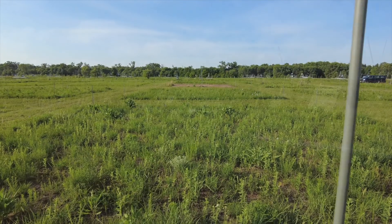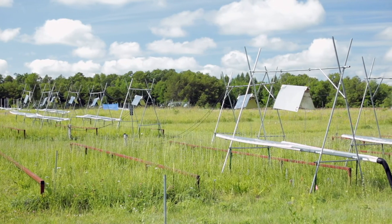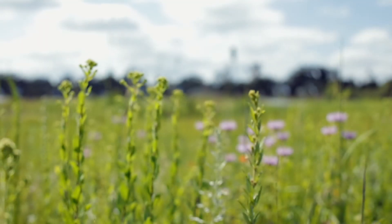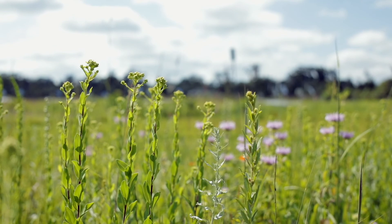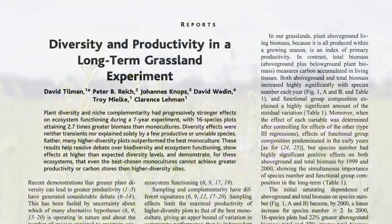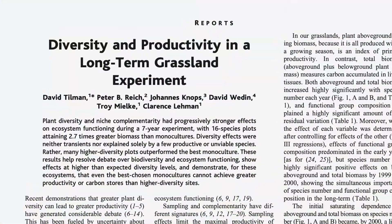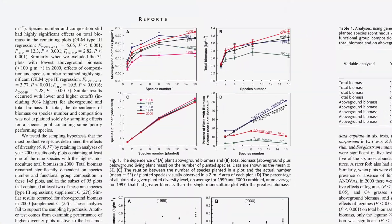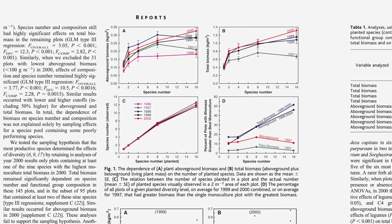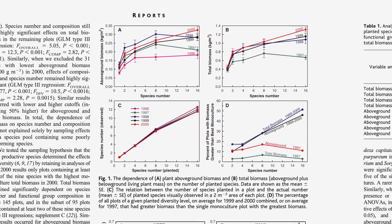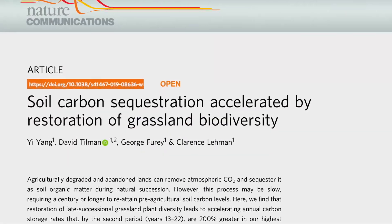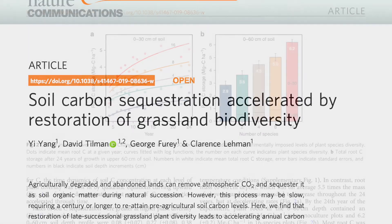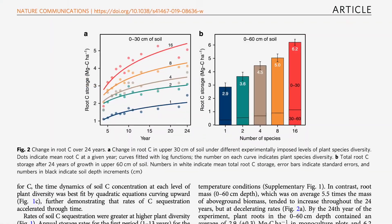Among other things, the Big Bio experiment showed that more diverse plots have higher levels of productivity, are more stable in the face of extreme climate events, are less likely to be invaded, and that changes in diversity of plants have consequences for higher trophic levels and soil communities and processes.